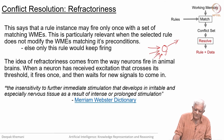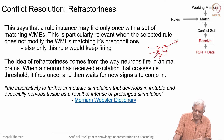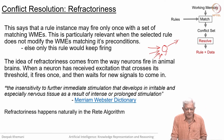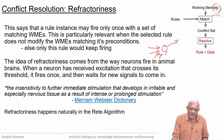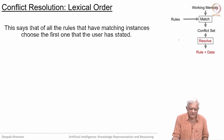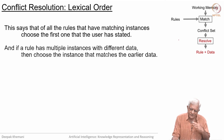The definition of refractoriness from the Merriam-Webster dictionary is: 'the insensitivity to further immediate stimulation that develops in irritable and especially nervous tissue as a result of intense and prolonged stimulation.' We will look at an algorithm called the Rete algorithm where refractoriness will happen naturally. The second conflict resolution strategy is called lexical order. It says that of all the rules that have matching instances, choose the first one that the user has stated — that is, the user has written the rules in some order, so choose the first one that matches.